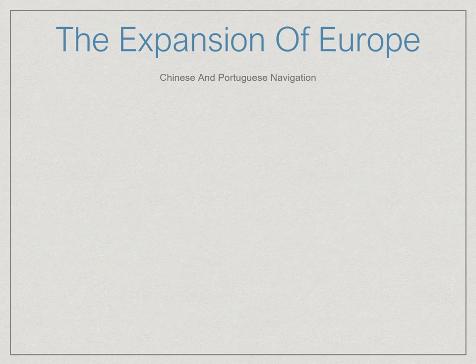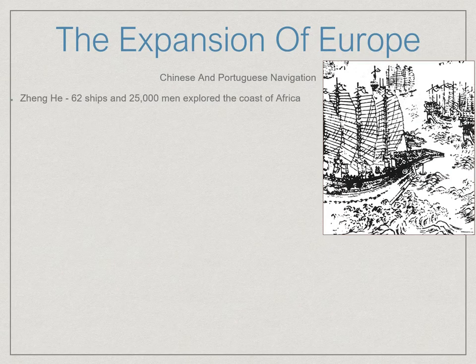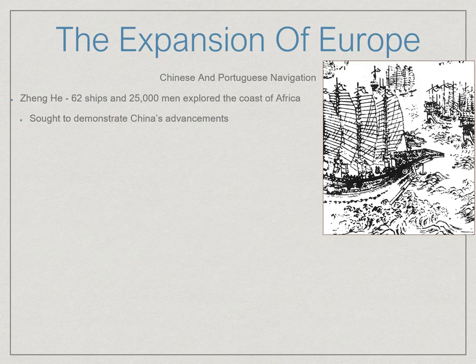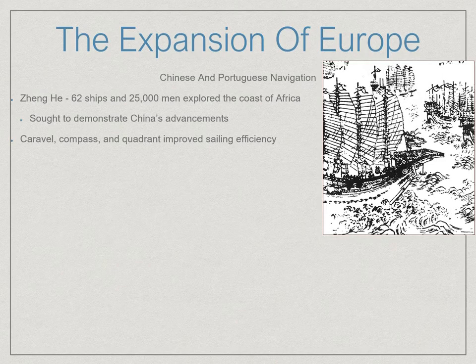Exploration really gets started prior to this in the 15th century, and our first big explorer is a Chinese man named Zheng He. He was a seven-foot-tall Muslim eunuch who commanded 25,000 sailors across 62 ships. They explored all across the Indian Ocean. The goal of Zheng He was to show off how strong China had become. They developed new technologies: the compass, coordinate sailing so you knew exactly where you were, and caravel ships so you could sail into the wind.